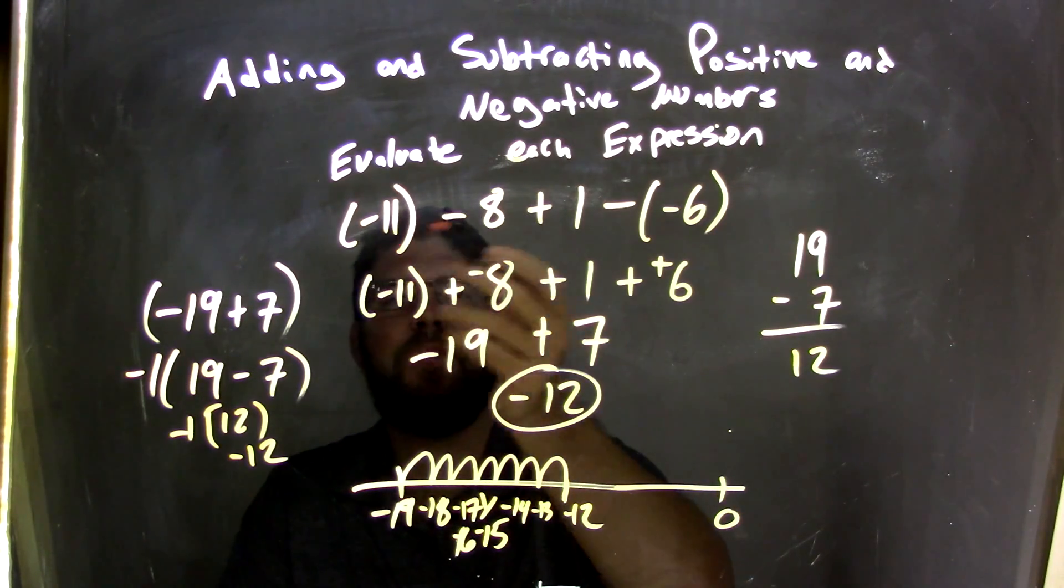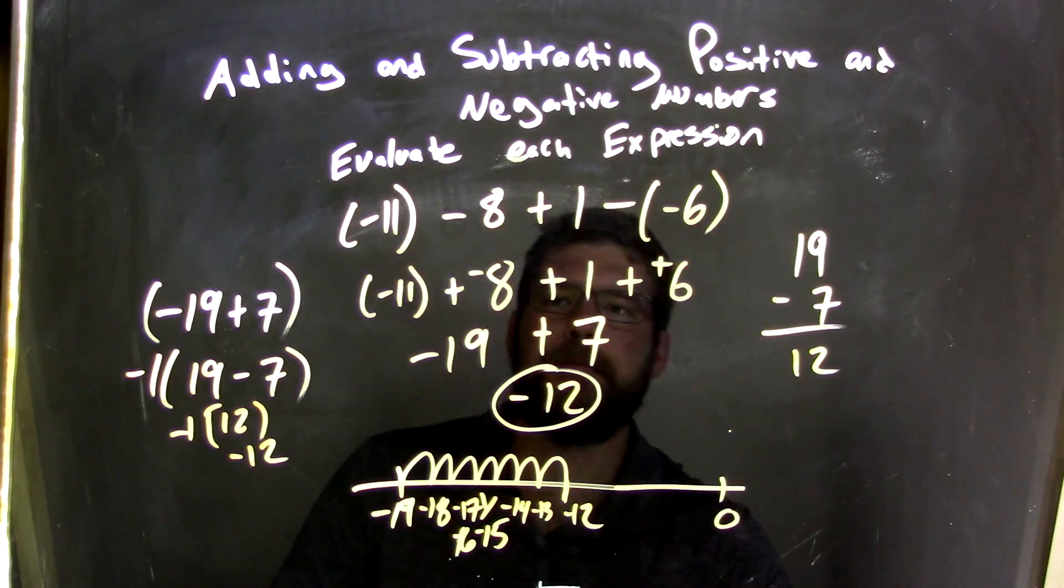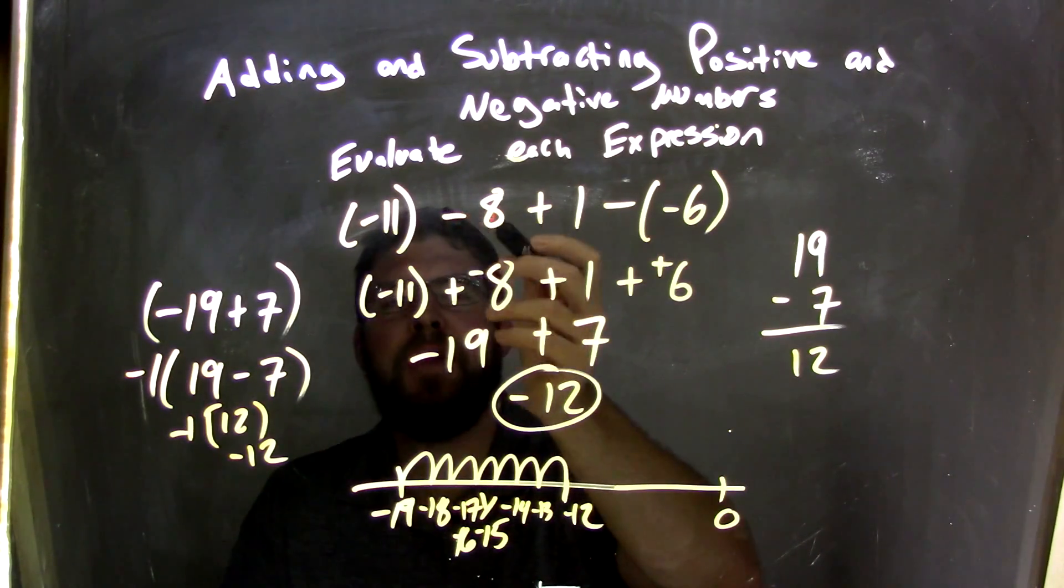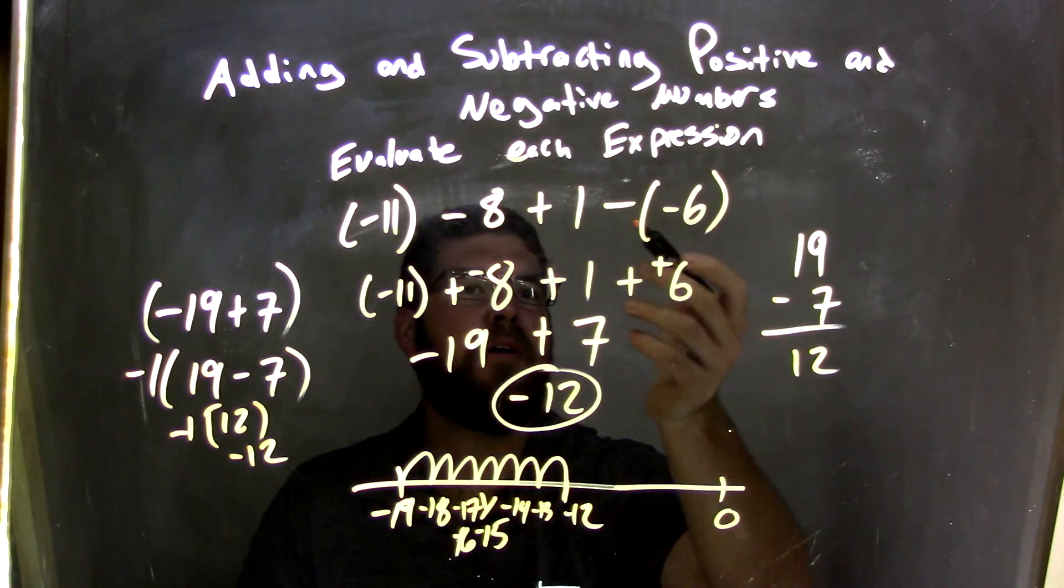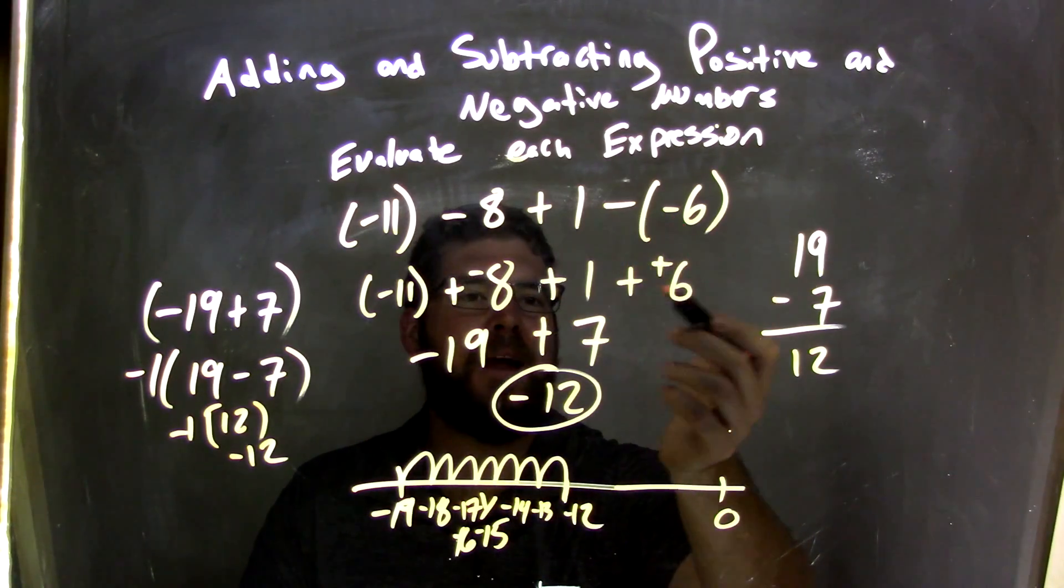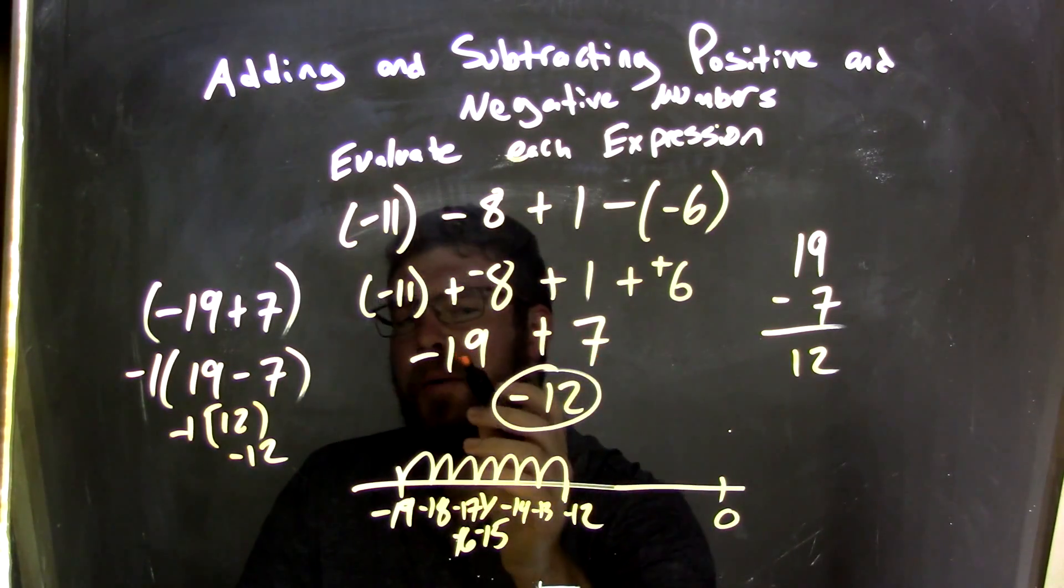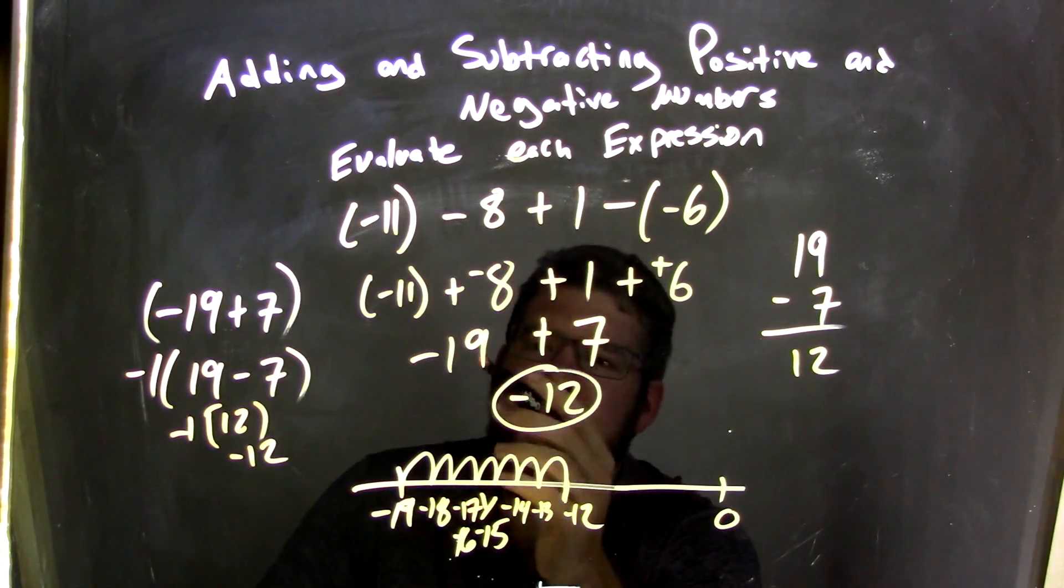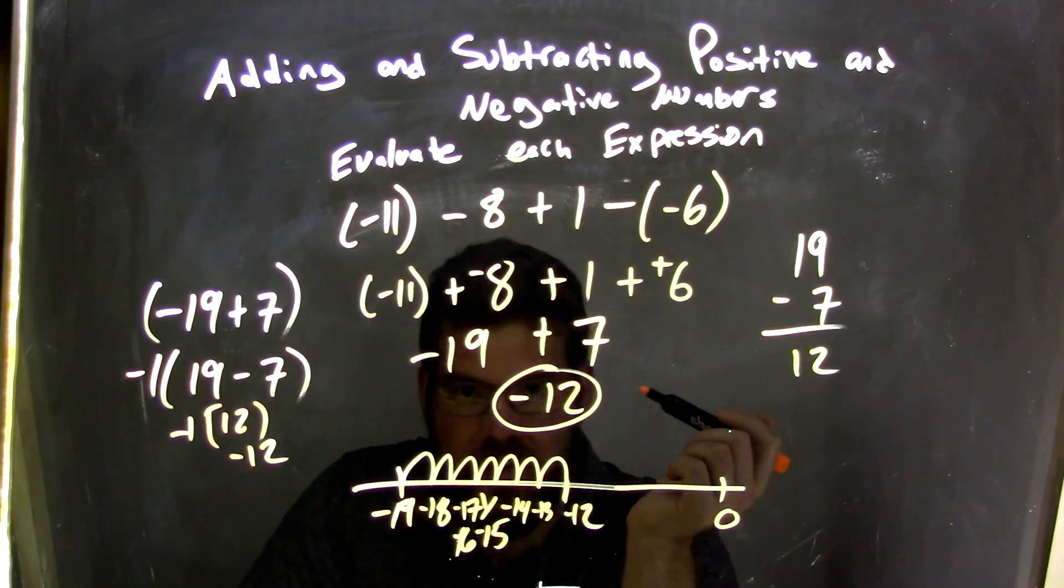So again, let's recap. We have negative 11 minus 8 plus 1 minus negative 6. I wrote this minus 8 to be plus negative 8, and then I combined that to be negative 19. Here, we're subtracting a negative which is adding a positive, so 1 plus 6, and that combined would be 7. So now we have negative 19 plus 7, which is negative 12 by many of our methods here to get there.